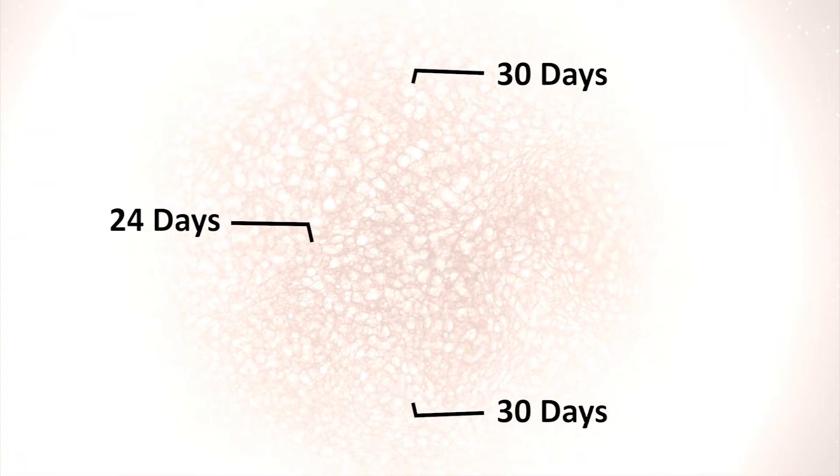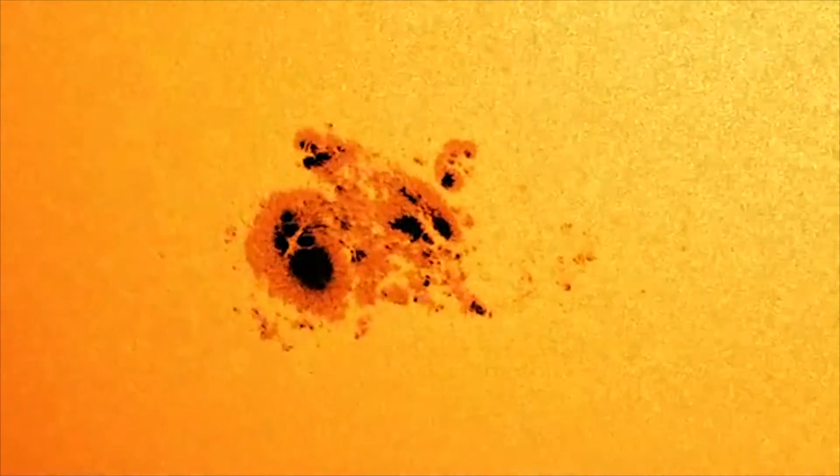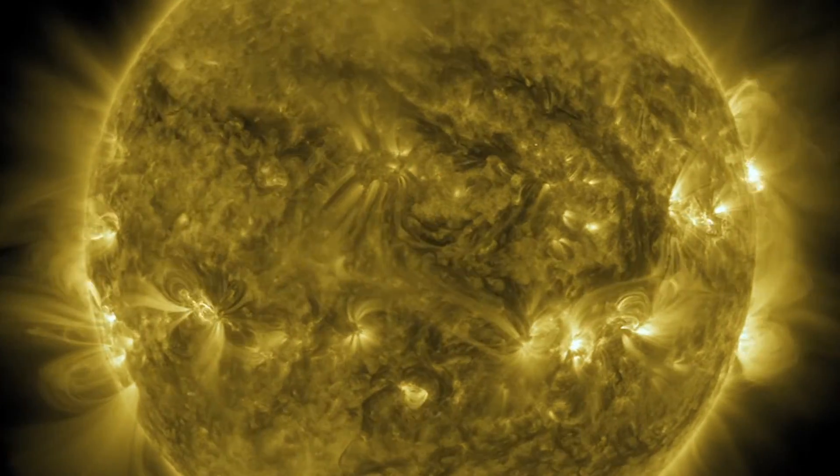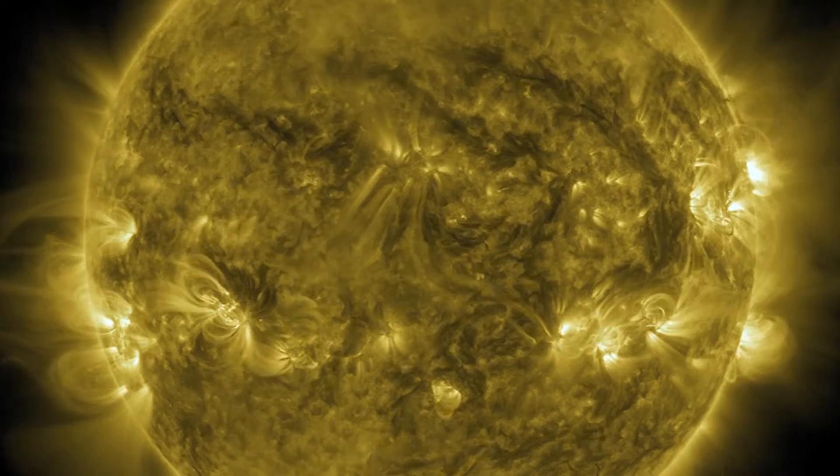On the Sun's equator, any point takes 24 days to rotate completely around the star, while the poles take more than 30 days. These measurements have been made by using sunspots as tracers of the surface and watching them turn with the star.